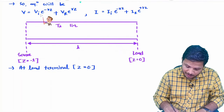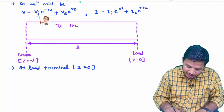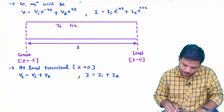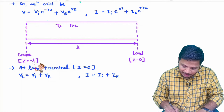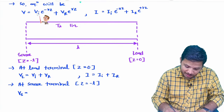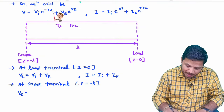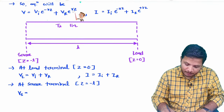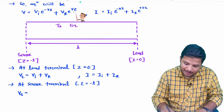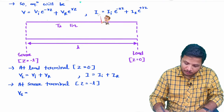When we place z = 0, e^0 = 1, so load voltage VL = Vi + Vr and load current IL = Ii + Ir. At the source side, z = −l, so source voltage = Vi·e^(+γl) + Vr·e^(−γl), and the same substitution applies for source current.